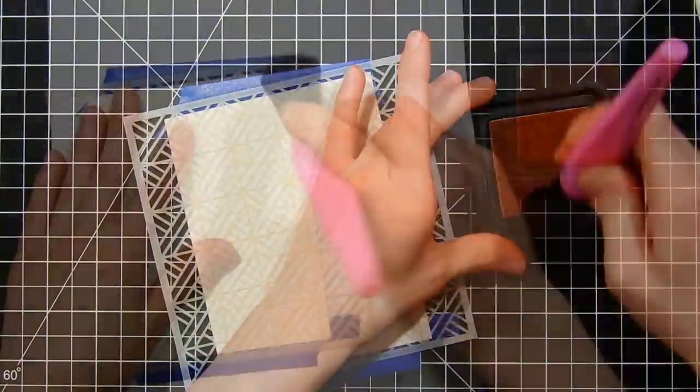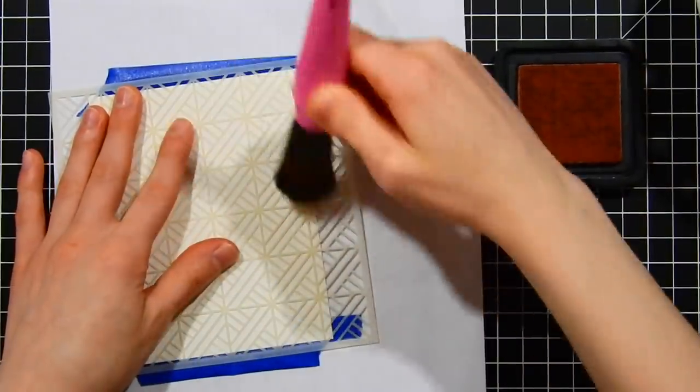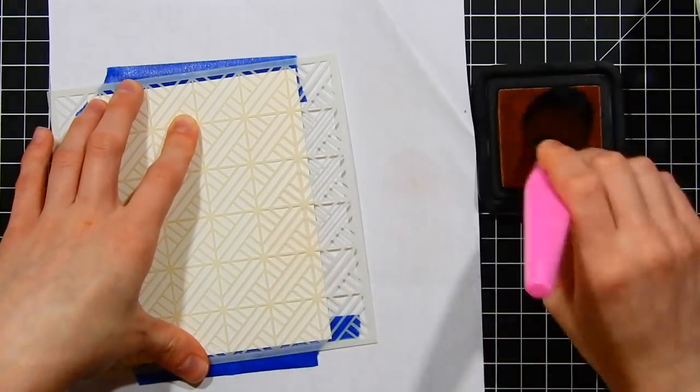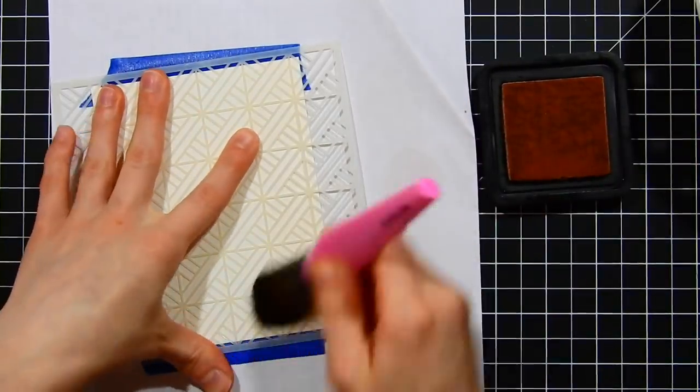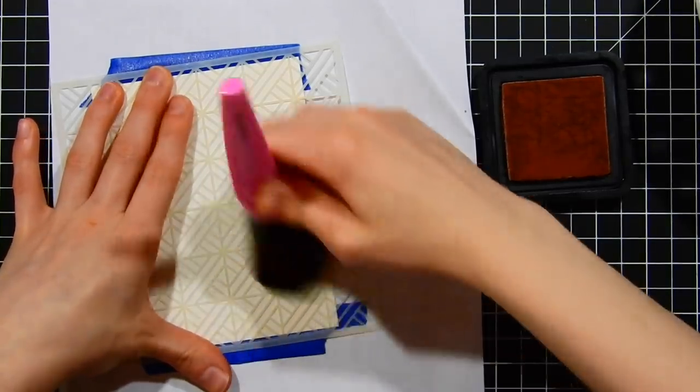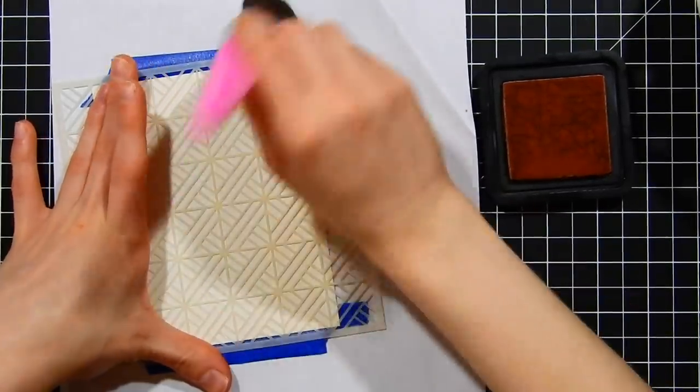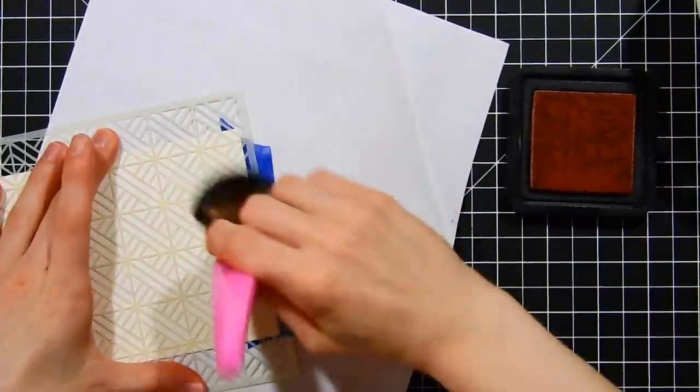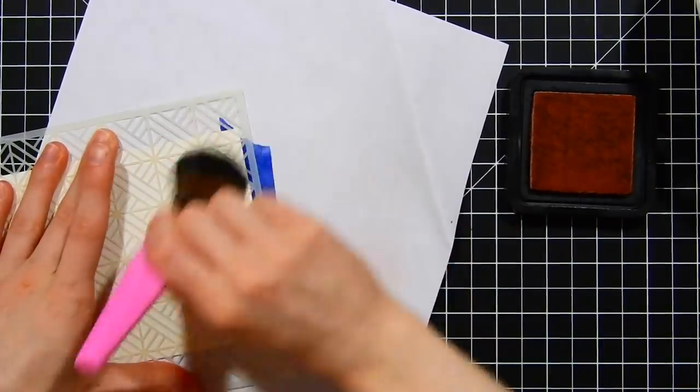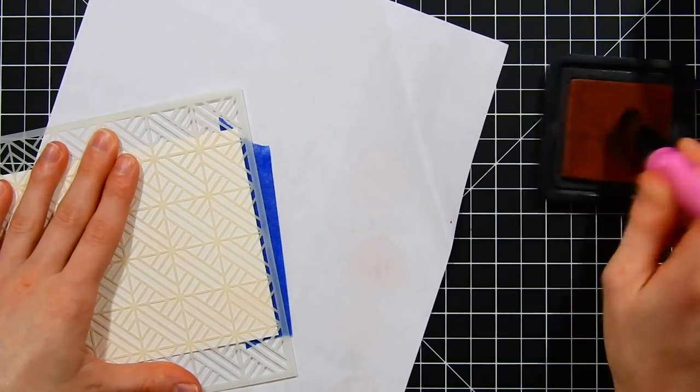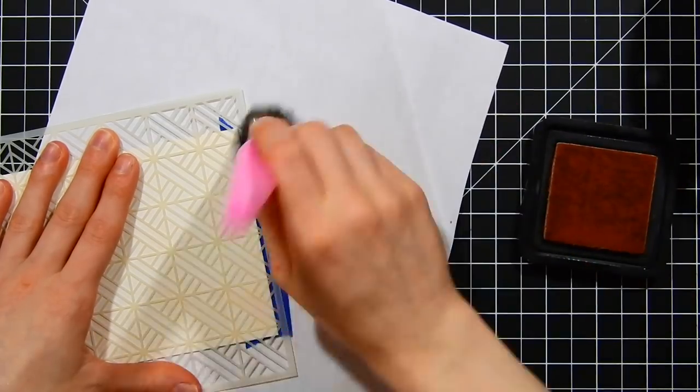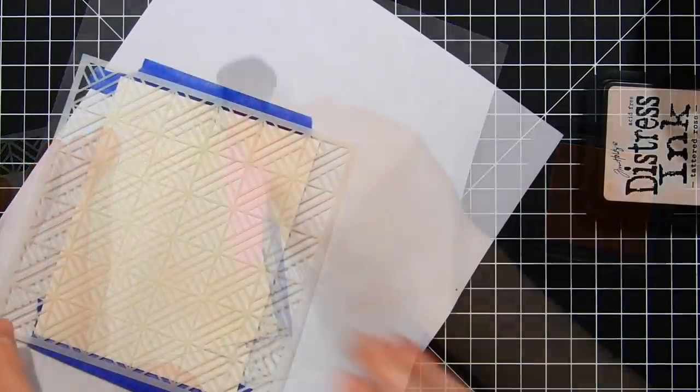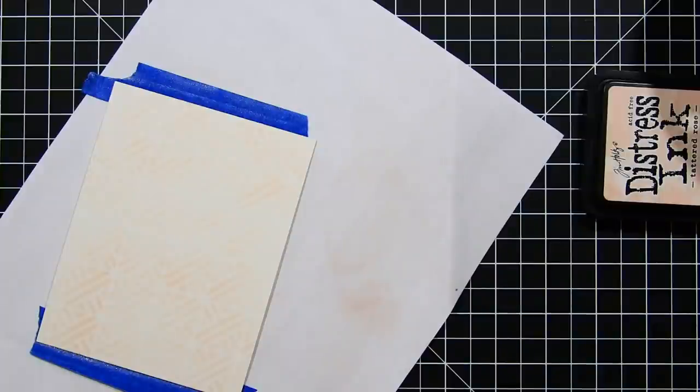You can use stencil brushes to apply distress ink. In this particular case this is not one of those clarity stencil brushes that are pretty popular right now. This is actually a makeup applicator and it works just as well. It's a really great way to apply the ink over top of the stencil in a very soft and very pastel format. I'm using tattered rose here because this is a very light color as it is but it's going to be even lighter and I'm not going to have any really dark areas that you might end up getting with the distress ink blender tool.